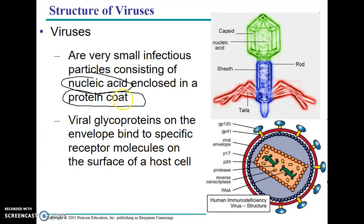A virus's general structure is: they have a protein coat on the outside, and inside that protein coat is some sort of DNA or RNA. They do not have ribosomes, they don't have mitochondria, they have no organelles — they are simply a protein coat with DNA or RNA inside. On their protein coat they have something called glycoproteins. Glycoproteins are proteins with a sugar on top.